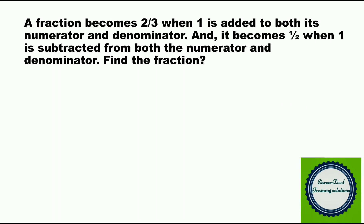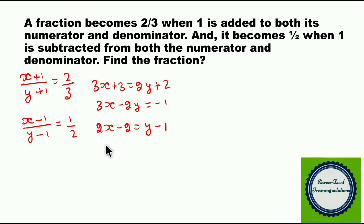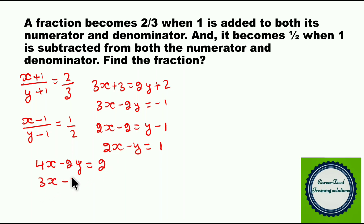Hope you have the answer. Take the fraction as x by y. Adding 1 to numerator and denominator gives 2 by 3: simplifying yields 3x plus 3 equals 2y plus 2, so 3x minus 2y equals minus 1. That's the first equation. Subtracting 1 from numerator and denominator gives 1 by 2: simplifying yields 2x minus 2 equals y minus 1, so 2x minus y equals 1. Multiply the second equation by 2 to get 4x minus 2y equals 2. Subtracting the first equation: 4x minus 3x gives x, and 2 plus 1 gives 3, so x equals 3.